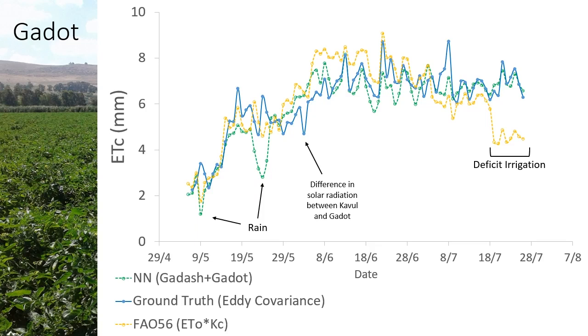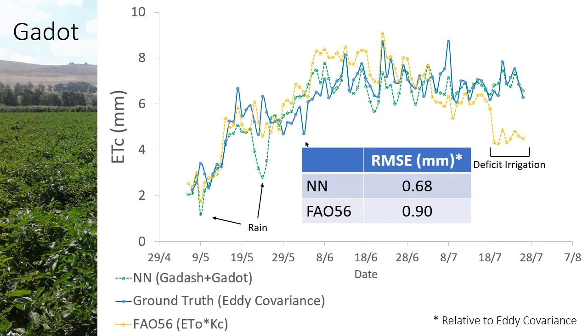If we look at the RMSE error compared to the eddy covariance measurement, our network prediction of the water need is in average closer than what the FAO 56 recommended.